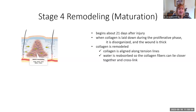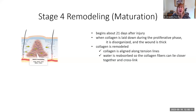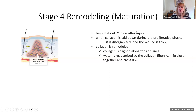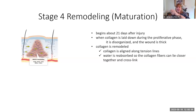Remodeling starts about three weeks after injury, while the other stages are still ongoing. Referring back to the third stage, the proliferative phase, where we are laying down collagen - we have all those fibroblasts giving us collagen - those collagen molecules are just kind of haphazardly laid down. What we have to do now is remodel the collagen. Where there is tension on the skin, the collagen molecules are going to line themselves along the lines of tension.